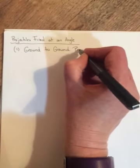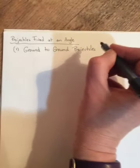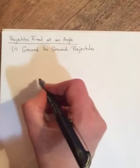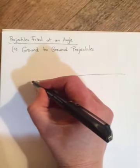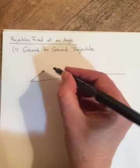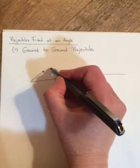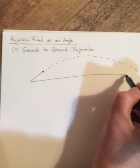You will be impressed to know that the second type is brilliantly named non-ground-to-ground projectiles. Okay, so in a ground-to-ground projectile, this is like a football that's kicked, a golf ball that's hit, a soccer ball that's hit into the air, a puck.